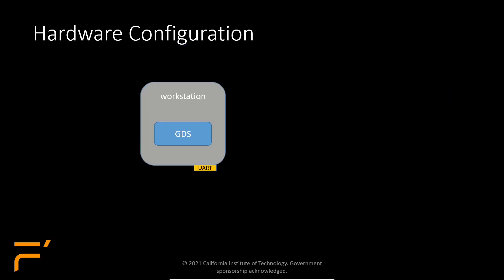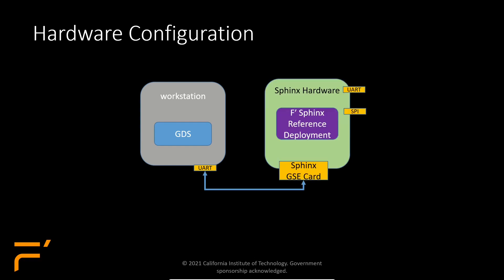A typical hardware configuration would involve a workstation running F' GDS, connected to the Sphinx via a UART connection. The Sphinx reference deployment would be running on the Sphinx hardware, and the Sphinx hardware can be connected to other devices via one of its connectors, such as SPI.